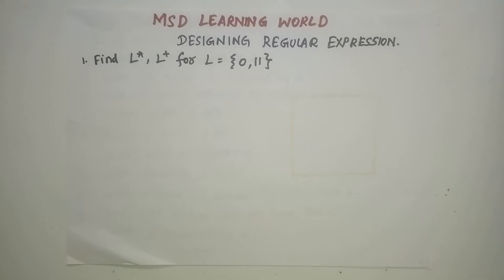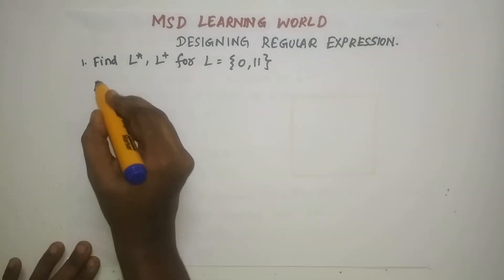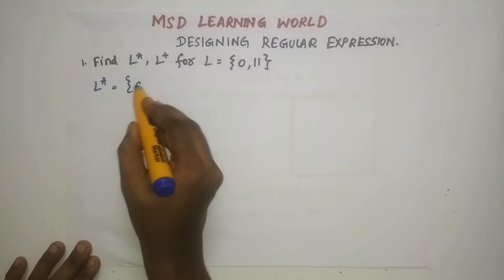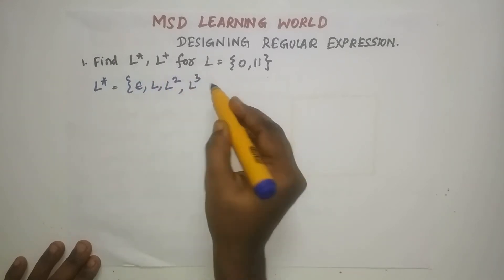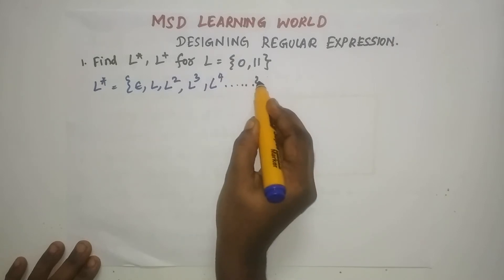As we already know, L* closure is nothing but 0 or more occurrences of the language L, whereas L+ is nothing but 1 or more occurrences of the language L. So L* includes ε, L, L², L³, L⁴, etc.